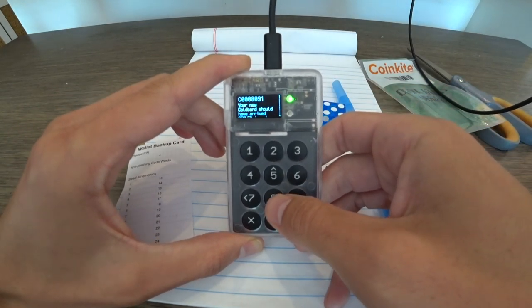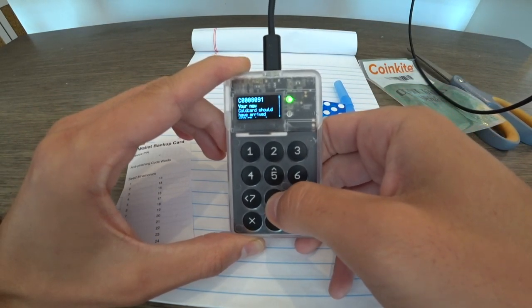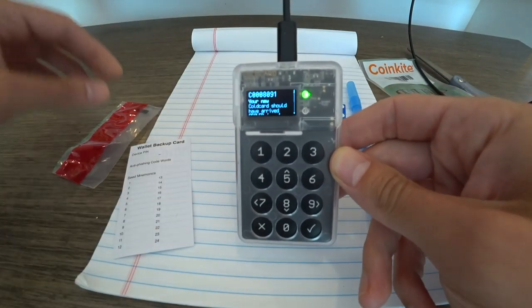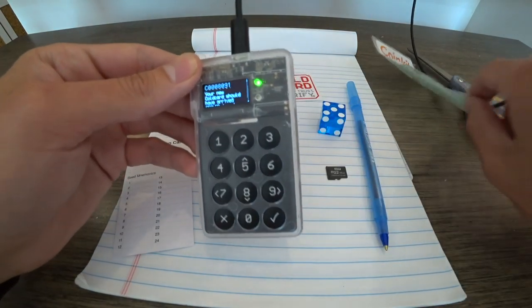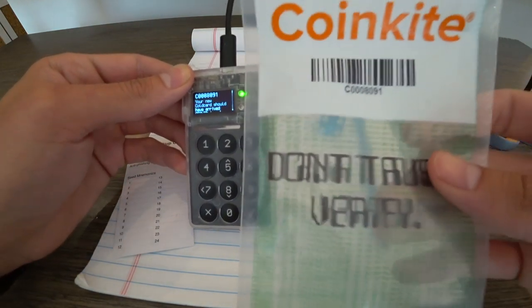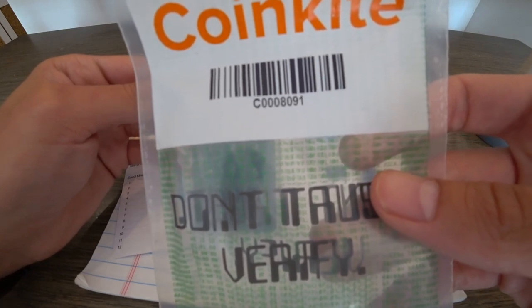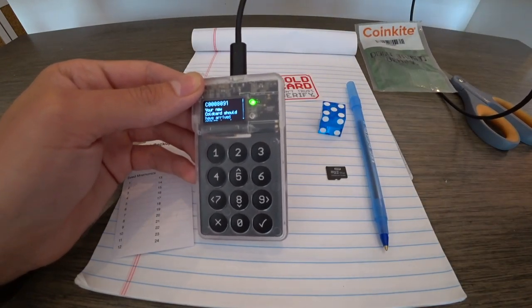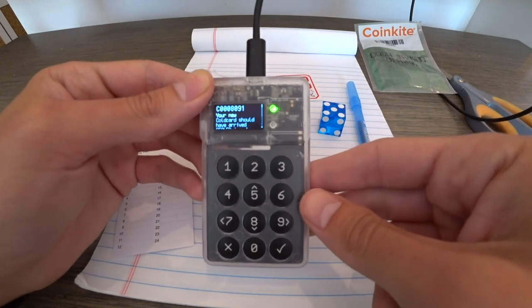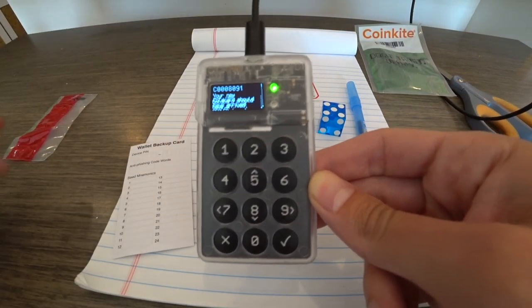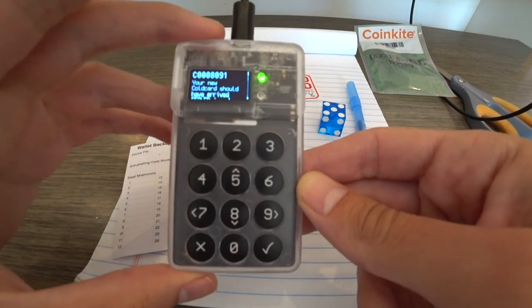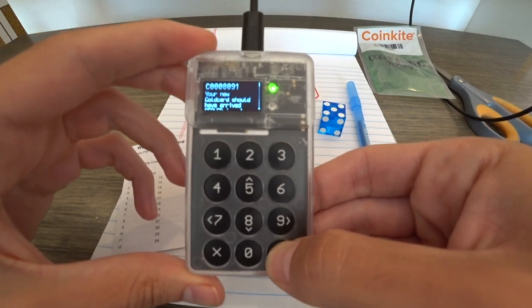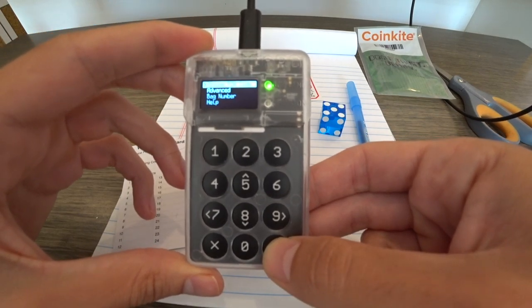Now this is interesting. This is something that only cold card does. It shows a number. In this case C008091. This number should match the number on your packaging. Just an added precaution to make sure the device wasn't switched out. And of course they could switch out the device and the packaging with a new number but make sure those two match. Okay great.